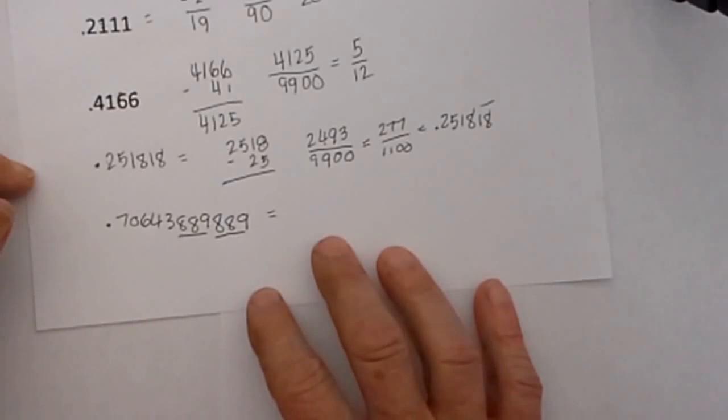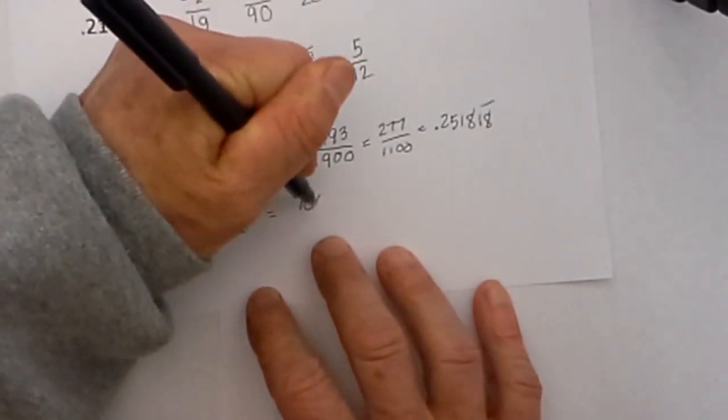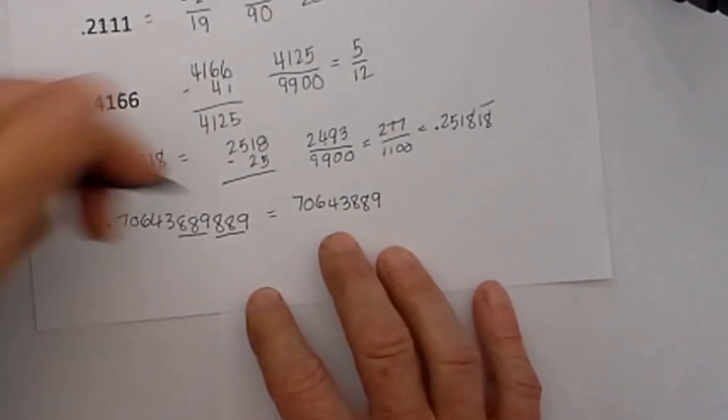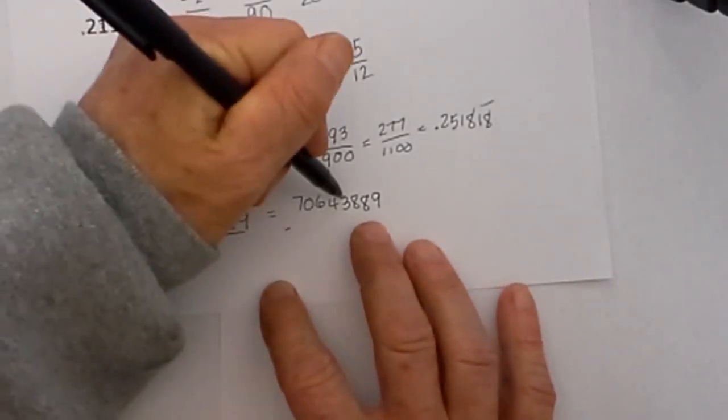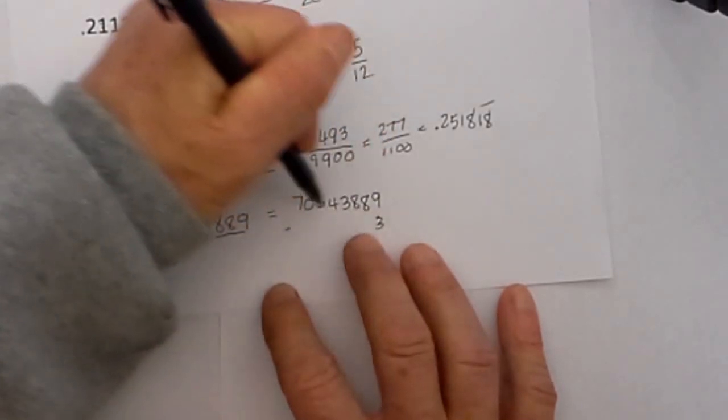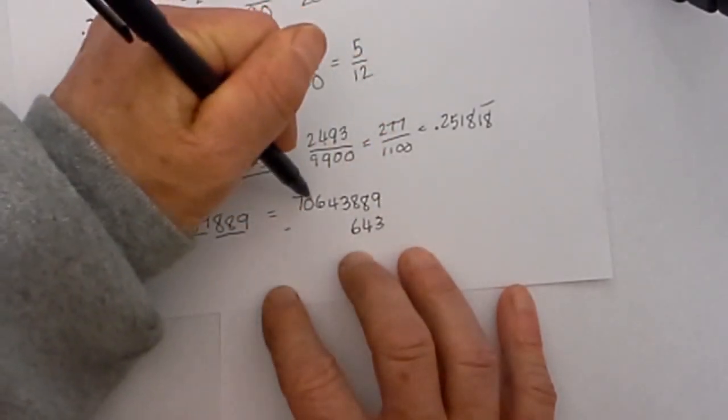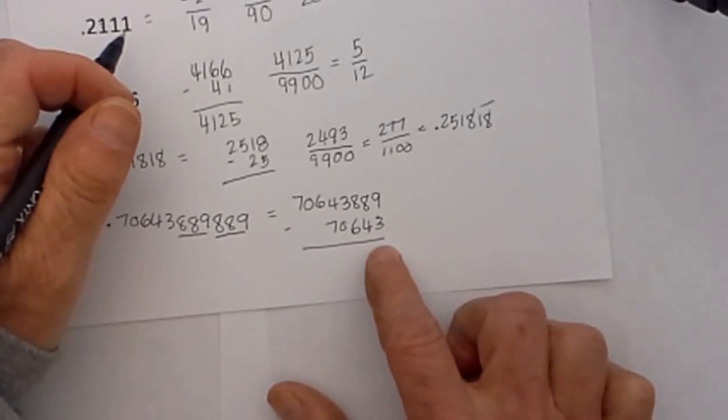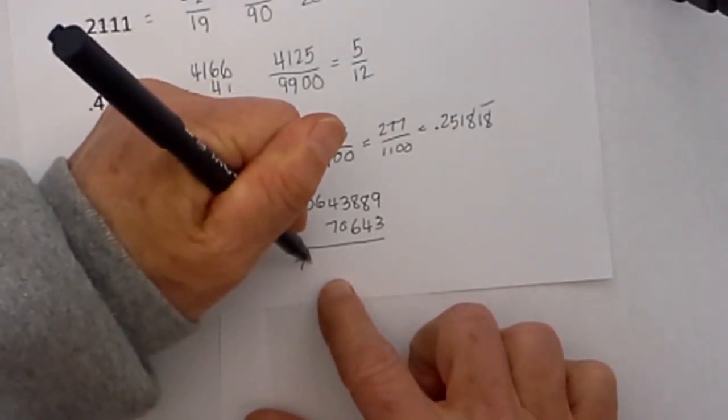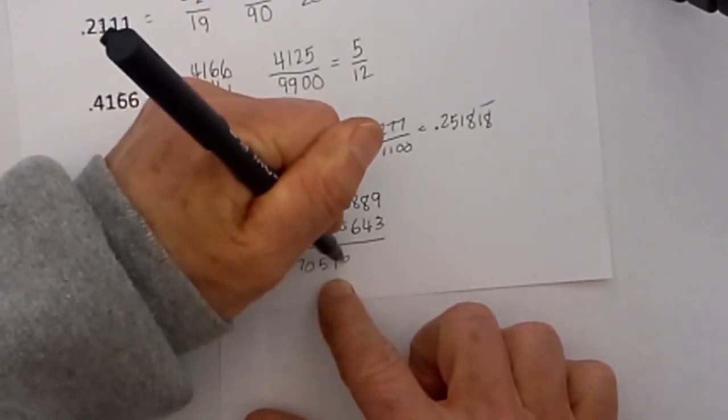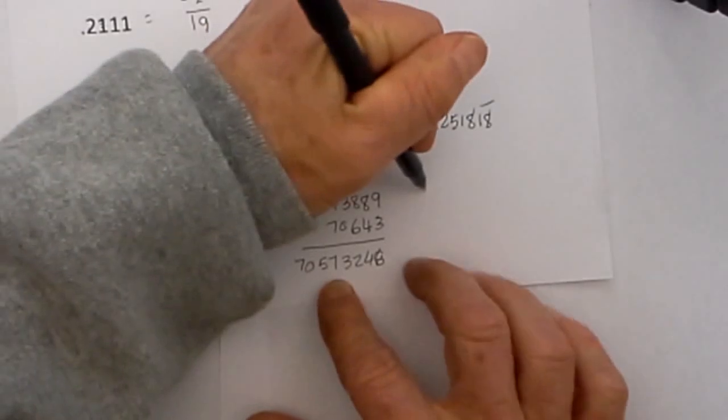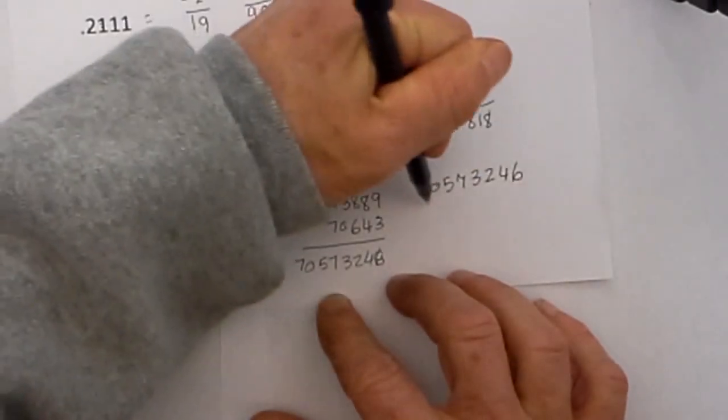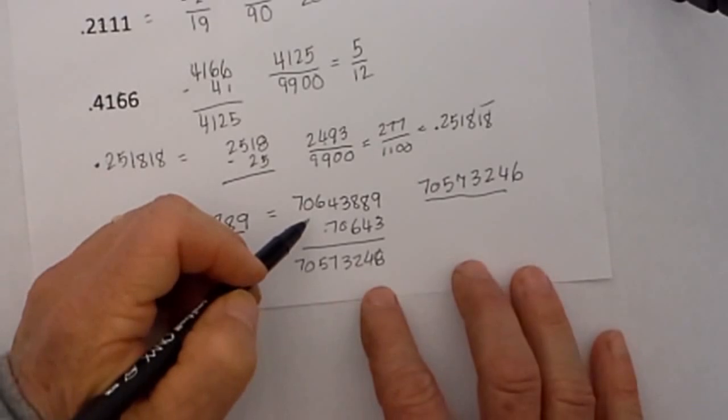So I will first write the repeating decimal so it is 70643889 minus the non-repeating which is 7064389. So 70643 is the non-repeating. If you subtract these two you are left with 70573246. I will repeat this up here 70573246 when I subtract these two numbers.